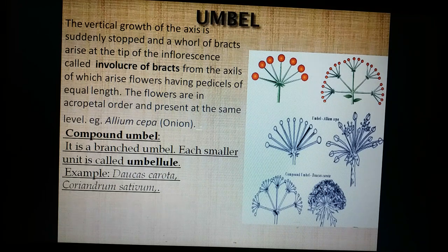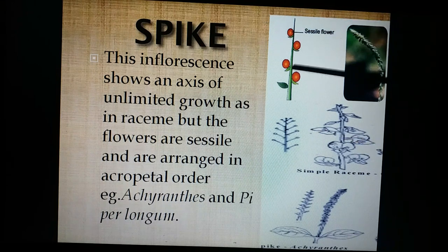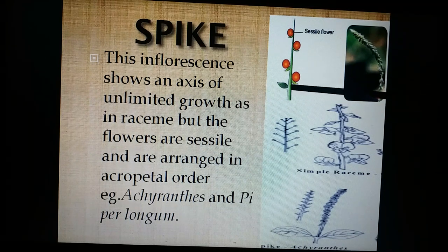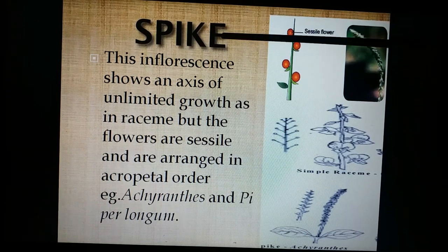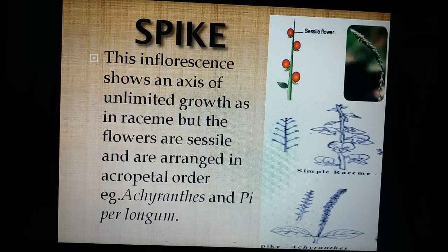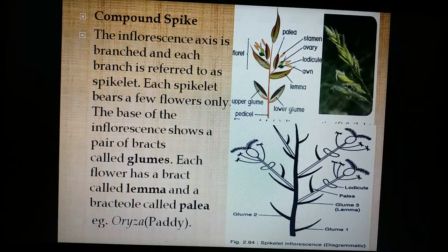Now we move to sessile racemose inflorescences, beginning with the spike. The difference from simple raceme is that here the flowers are sessile. Many sessile flowers are arranged in an acropetal fashion on an indefinitely growing peduncle — this is called a spike, a feature of Amaranthus and Achyranthes. If branched, it is called a compound spike, a feature of many grasses (Poaceae members), such as wheat.